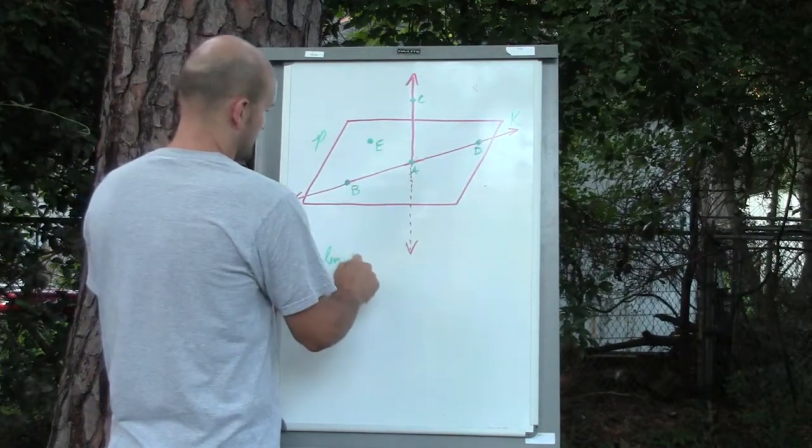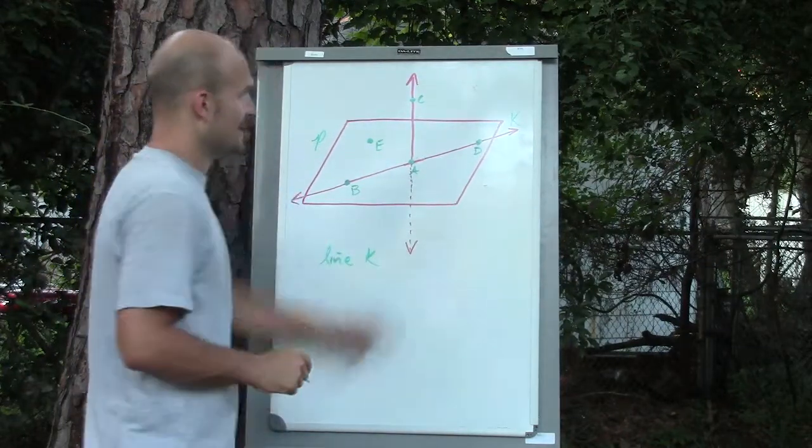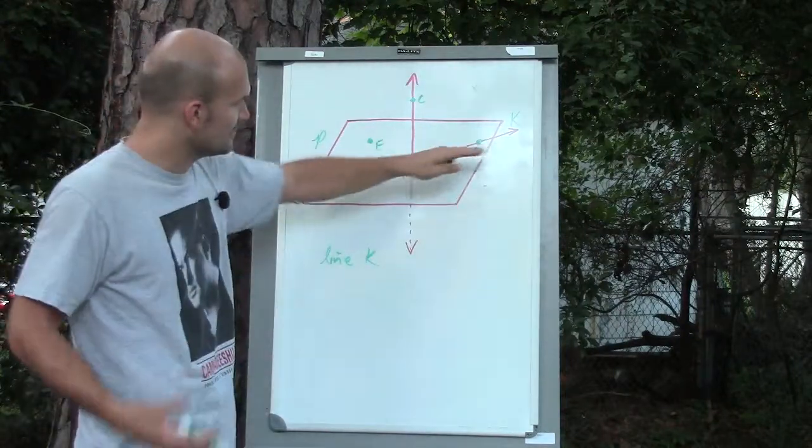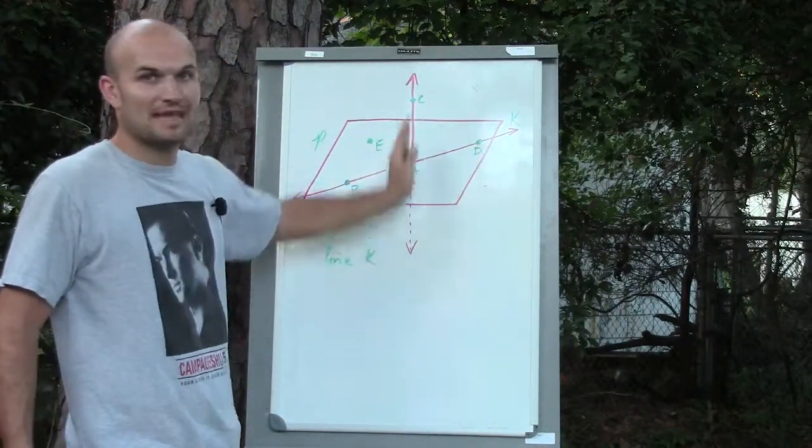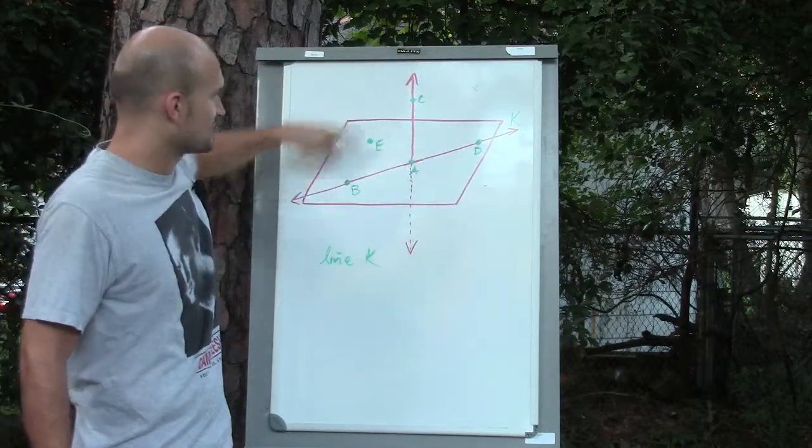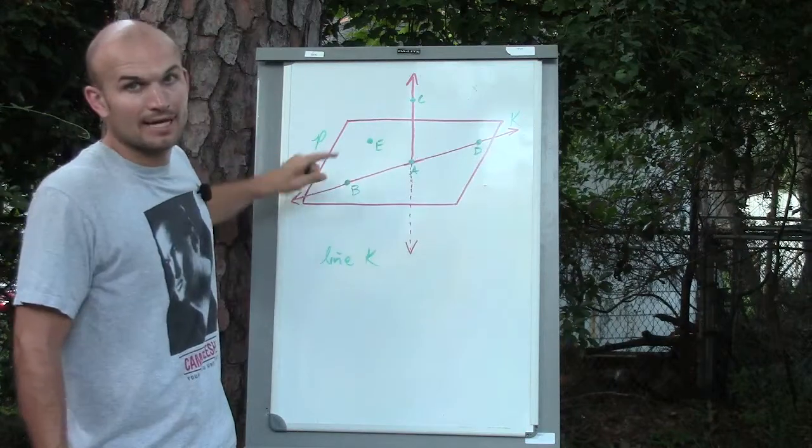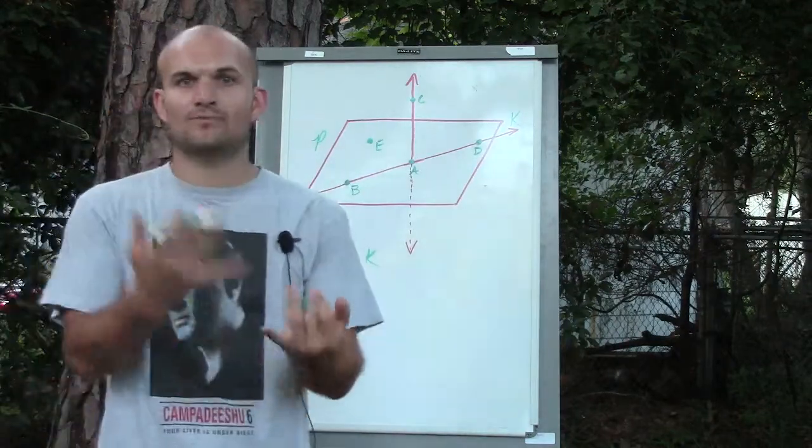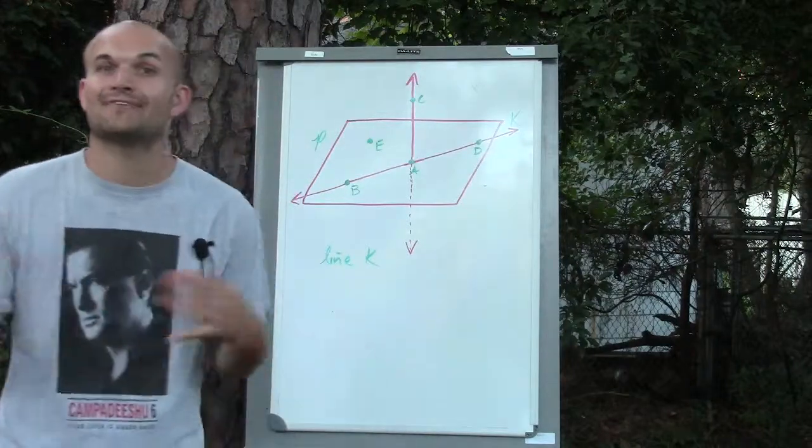One way is we can just write line K, which is this line right here. What you see is I have a line, and then I actually have one that's orthogonal to it, heading up and down through the plane P. If you look at my videos, I explain what is a plane, what is a line, what is a segment, what is a point, all that kind of stuff.